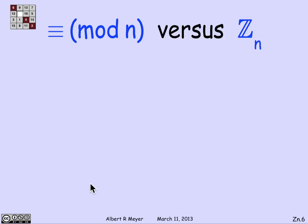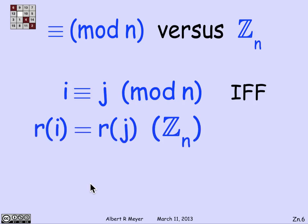What's the connection between equivalence mod n or congruence mod n and Z_n? Well, it's fairly simple. In Z_n, we convert congruences into equalities. So i is congruent to j mod n if and only if r of i is equal to r of j in Z_n. And this is just a rephrasing of the fact that two numbers are congruent if and only if they have the same remainder.